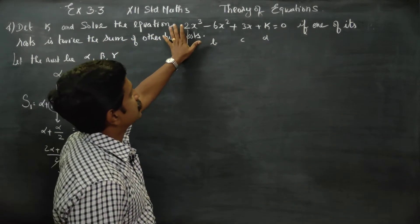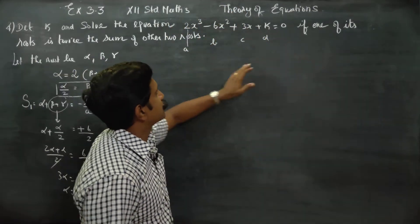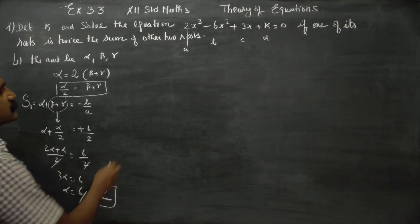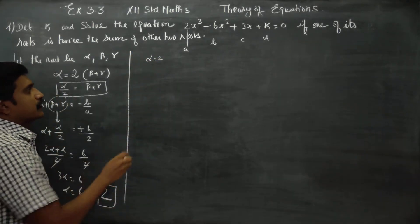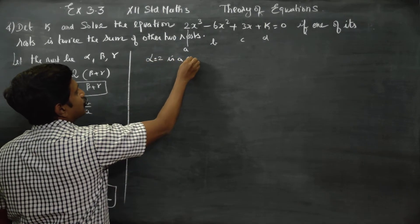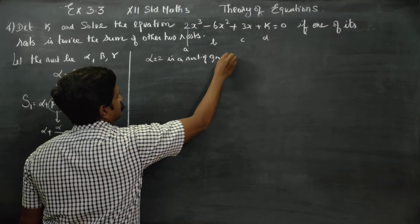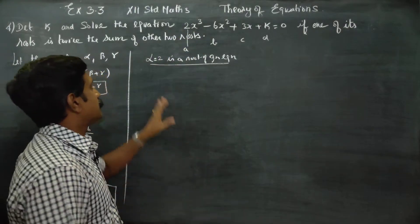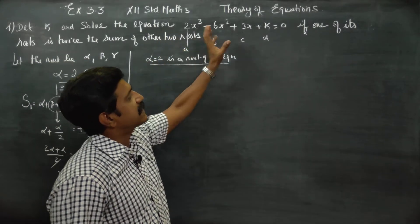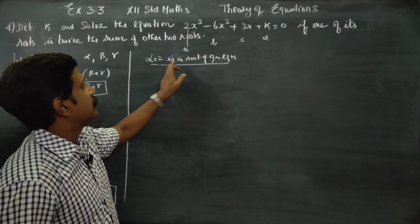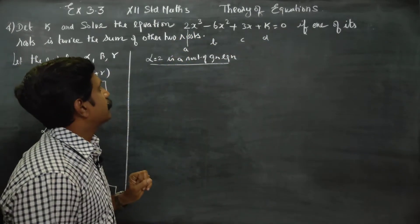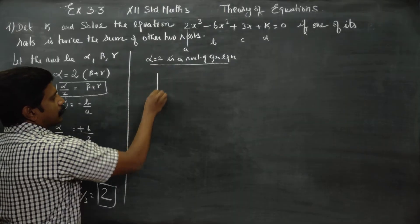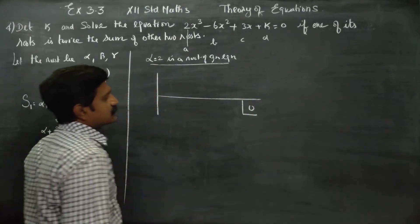Alpha equals 2 is a root of the given equation. Since alpha = 2 is a root, x minus 2 can exactly divide the polynomial without a remainder. I will use synthetic division with x = 2. The coefficients are 2, −6, 3, and k.